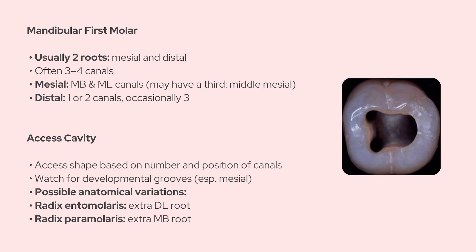The access cavity here is usually trapezoidal or rhomboid, depending on the number and position of the canals. Be mindful of developmental grooves between canal orifices, especially in the mesial root, and always watch out for anatomical variations like radix entomolaris or radix paramolaris, which are extra roots found distolingualy or mesiobuccally.